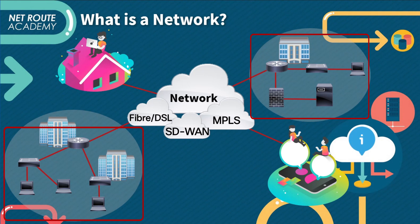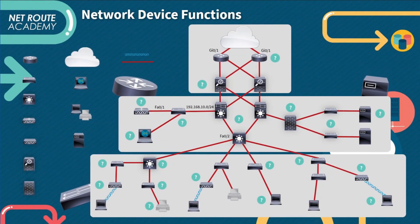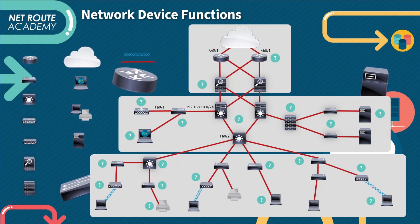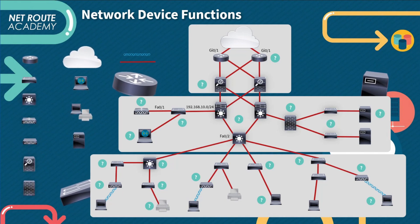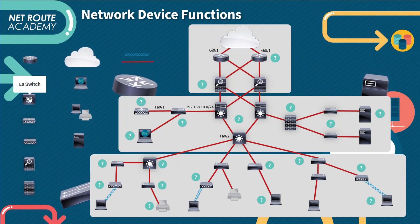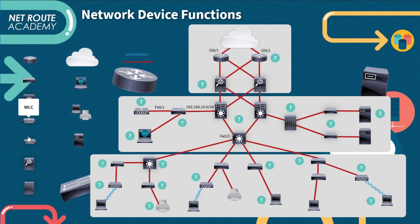We see a couple of different flavors or mechanisms or styles of WAN to connect this local area network — we have fiber, DSL, SD-WAN, or MPLS. Understanding the meaning of each network characteristic enables you to better understand how the network is designed and what type of performance you should expect from it. On the next slide we have the network devices, but one of the important things you need to understand is how to interpret a network diagram.